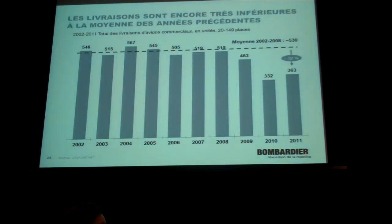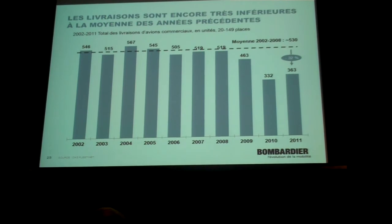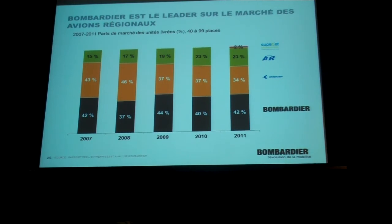On deliveries, they are well below past averages. The industry in the 21–49 seat category has had a quite consistent level of deliveries from 2002 onward to 2008, and then we saw the impact of the recession with reduced deliveries. We remain 32 percent below the average number of deliveries in that period. We are very proud to say we continue to be the market leader with our jet and turboprop family, with a 42 percent market share in the regional aircraft 42–99 seat category.